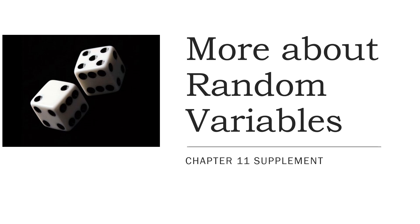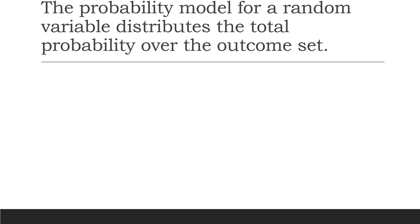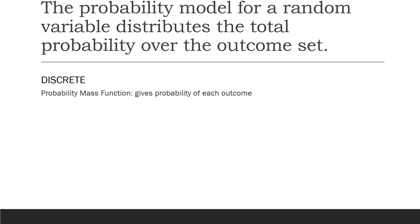This is a supplemental video with more information about random variables. The probability model for a random variable distributes the total probability over the outcome set. In the case of a discrete random variable, the model is given by a probability mass function.